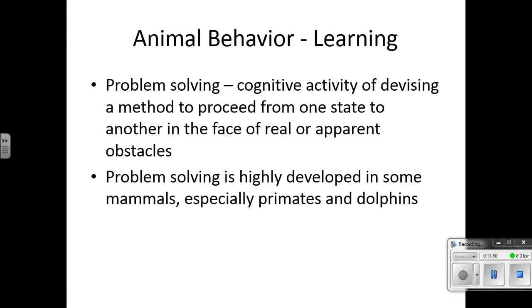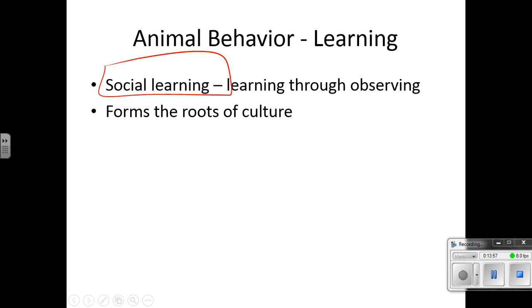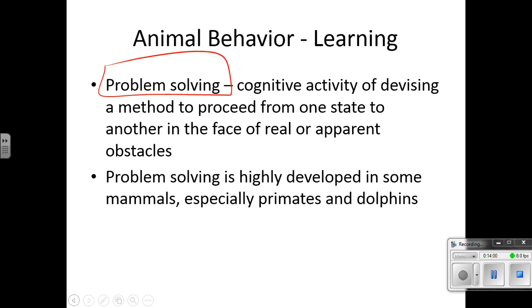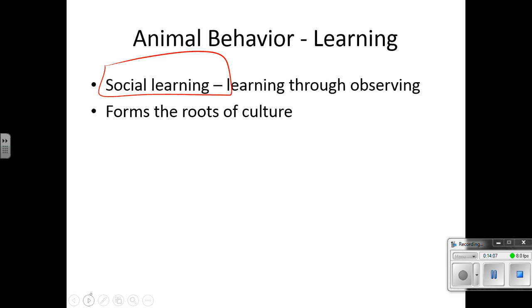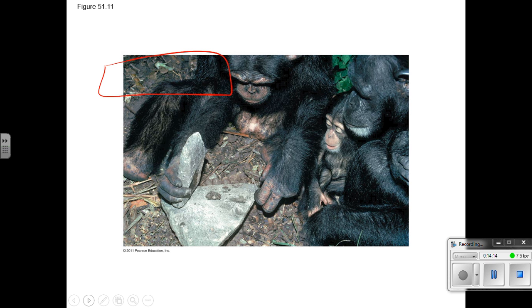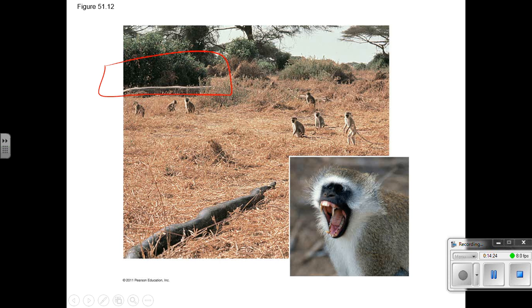Problem solving is the cognitive activity of devising a method to proceed from one state to another in the face of real or apparent obstacles. Problem solving is highly developed in some mammals, especially primates and dolphins. Social learning is learning through observing others and forms the root of culture. Young chimpanzees learn to crack oil palm nuts by observing elders. Vervet monkeys learn the correct use of alarm calls — upon seeing a python, they give a distinct snake alarm and members of the group stand upright and look down.